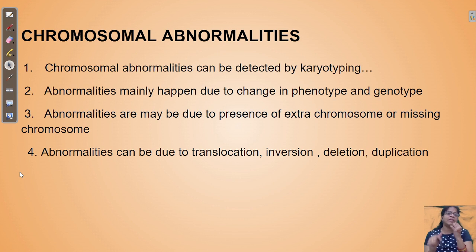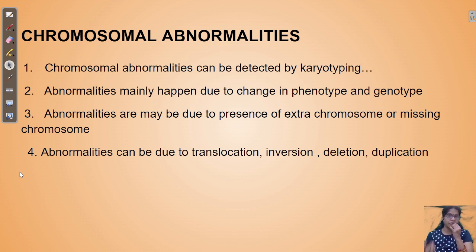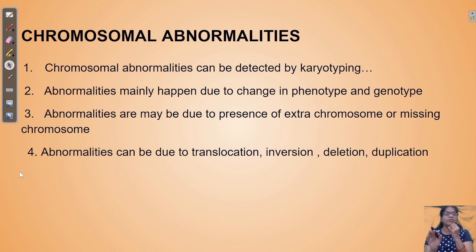Now I want to concentrate on what are the types of chromosomal abnormalities. You may have heard about Down syndrome, Turner syndrome, Klinefelter syndrome, Patau syndrome, and Edwards syndrome. These are called chromosomal abnormalities because the chromosomal number is not proper — it's not 46. Everyone should have 46 for a normal human being, but it is not happening in these cases.